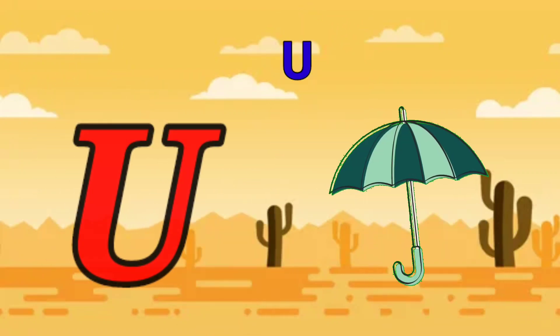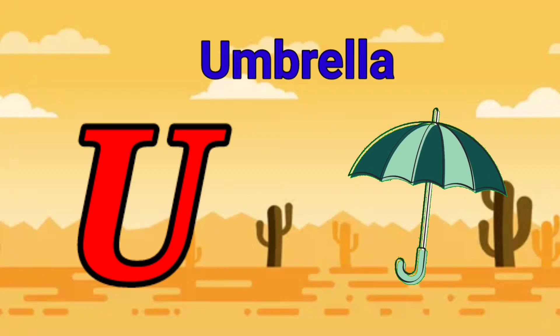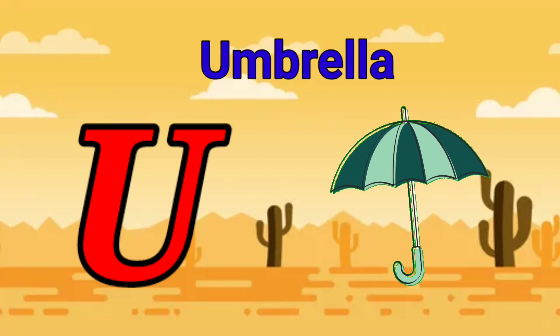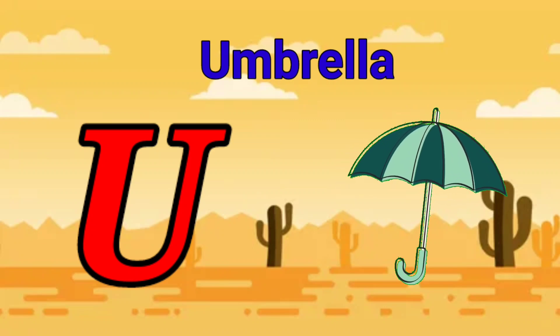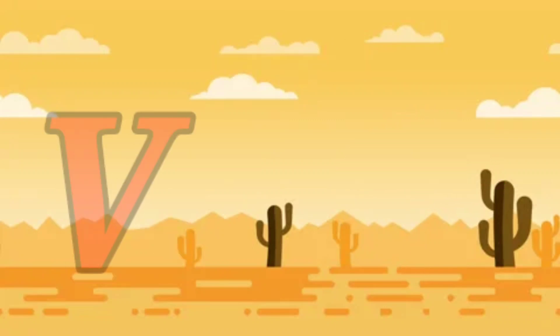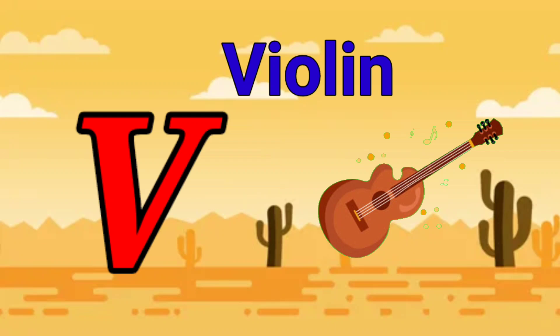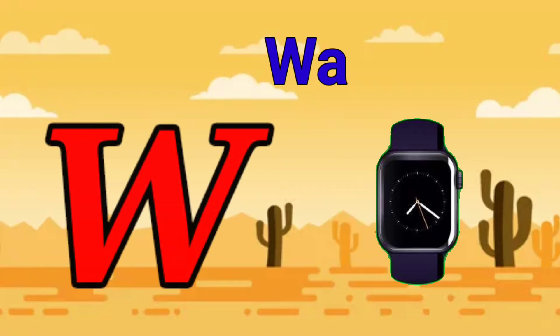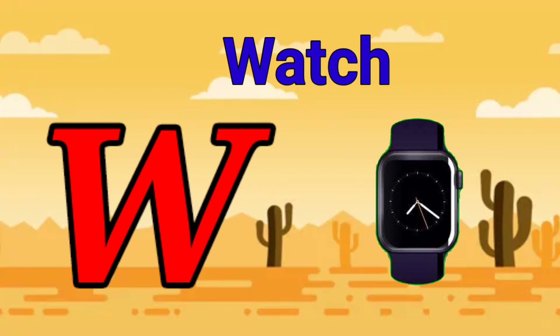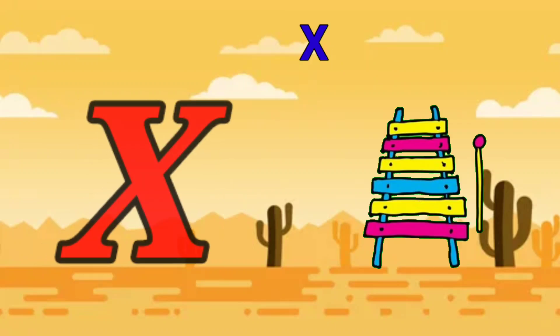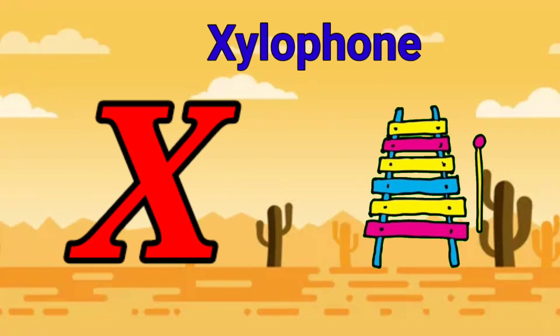U is for umbrella, u-u-umbrella. V is for violin, v-v-violin. W is for watch, w-w-watch. X is for xylophone, x-x-xylophone.